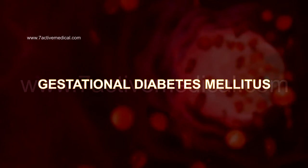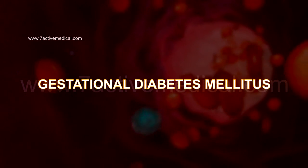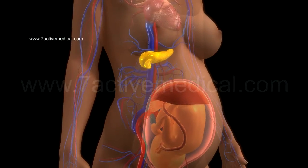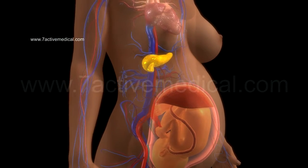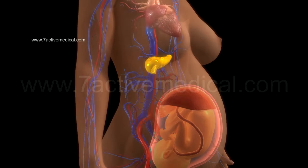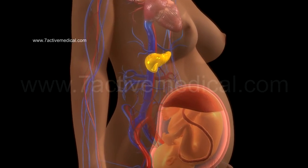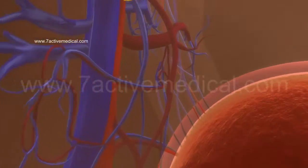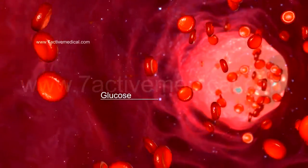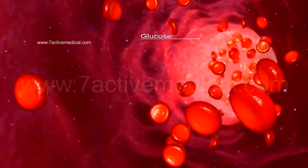Gestational diabetes mellitus is a disorder during pregnancy characterized by increased levels of glucose in the blood over and beyond the normal limits.